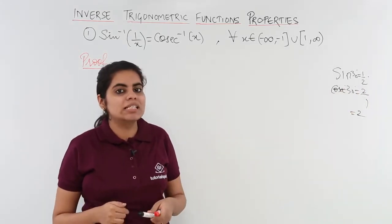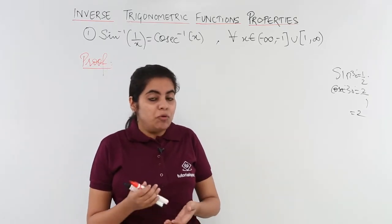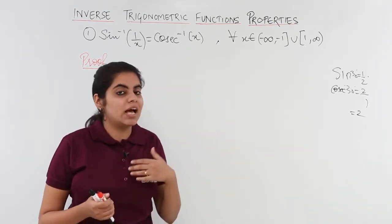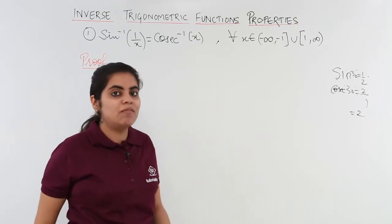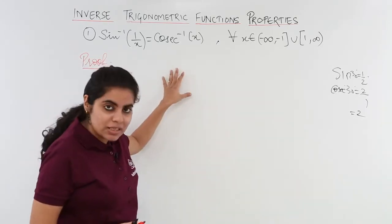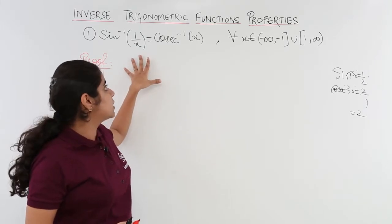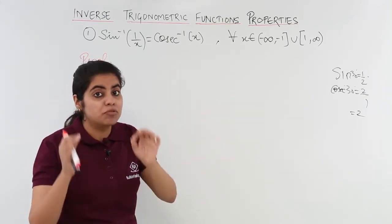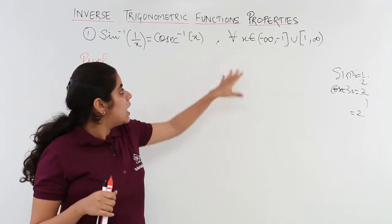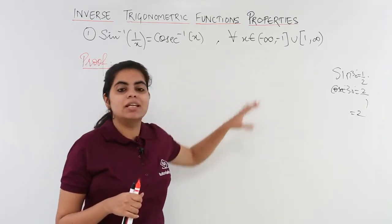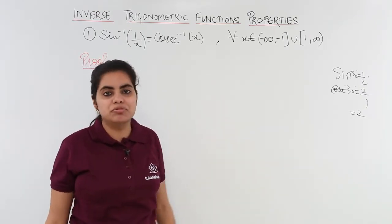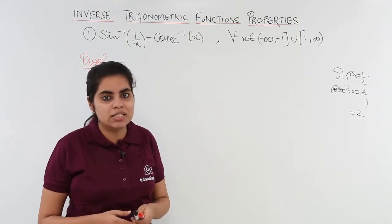Now if sin and cosecant are inverses of each other, what about sin inverse and cosecant inverse? So you have to learn this and we will be proving this to make you understand more clearly that yes, sin inverse 1 by x is equal to cosecant inverse x, where the condition for x is x belongs to minus infinity to minus 1 union 1 to infinity, which we have already seen in cosecant case.